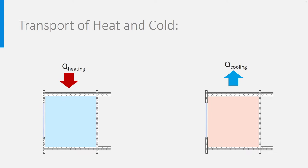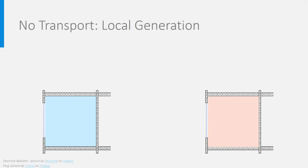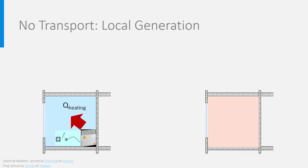Basically, there are three main ways of bringing heat and cold into a room. First, you can generate the heat and cold in the room itself — there is therefore no need for transport. This would be the case if an electrical radiator or a stove are used in the room, or a room air conditioner.